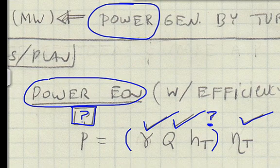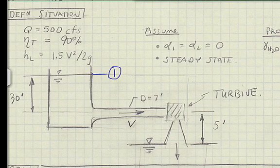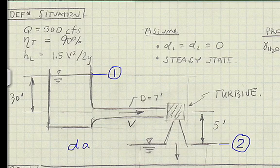And since this variable appears in the energy equation, next let's apply the energy equation from 1 to 2. Locate section 1 on the free surface of the reservoir. Locate section 2 on the surface of the tailwater. Because we know information at 2 and at 1. And similarly, we'll define our datum at elevation 2.